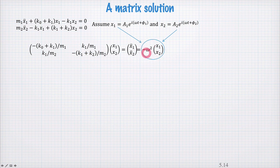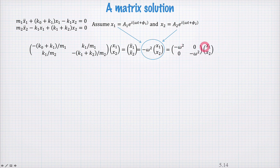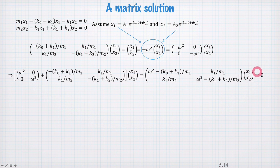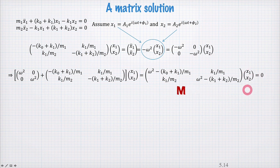Rewriting this factor of negative omega squared out the front as an identity matrix multiplied by negative omega squared, we get on the right hand side a matrix times a vector. So now we can take this matrix times a vector over to the left hand side of the equation to leave zero on the right hand side, and adding these two matrices together we find a single matrix multiplied by the vector of x's equal to zero. The matrix M multiplied by the vector x equals zero — M dot x equals zero.